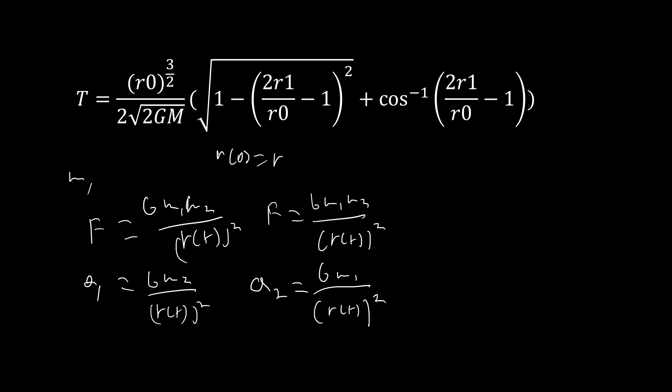So we can actually write this as r double prime equals this plus this, except obviously they're going to be negative because they're causing the distance to decrease rather than increase. So it's going to end up being negative G (m1 plus m2) over r(t) squared. We don't have to worry about that.